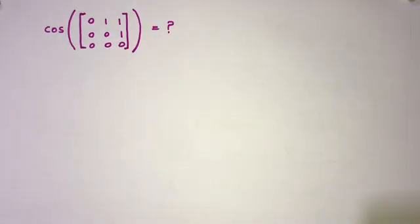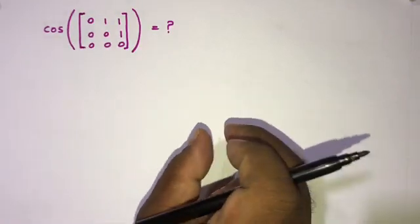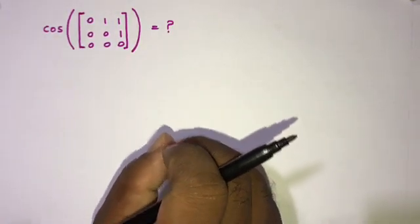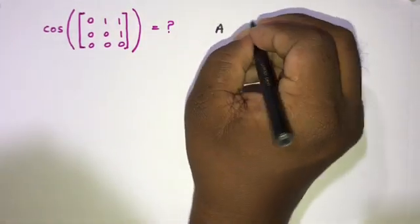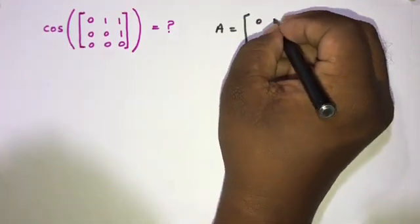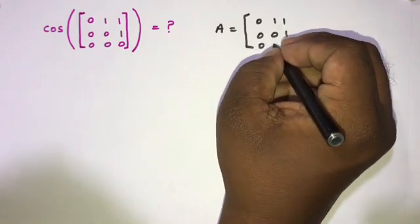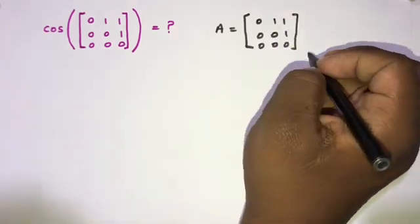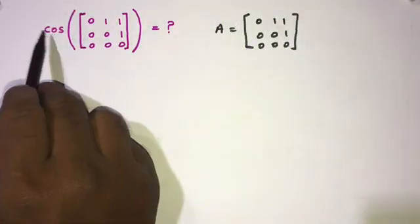Welcome to the mathematics channel. Today we are going to find the cosine of a matrix. This is an open mathematical olympiad university question. First, we take matrix A equal to: row 1: [0, 1, 1], row 2: [0, 0, 1], row 3: [0, 0, 0].